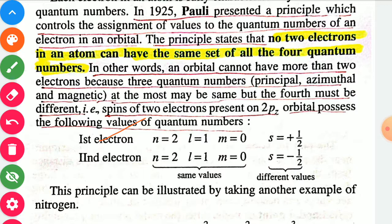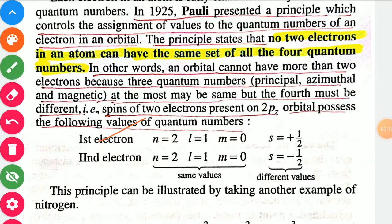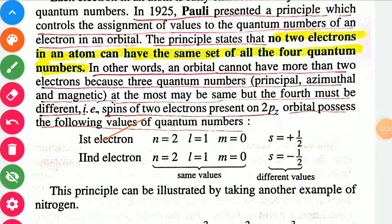For the second electron in the same shell with l equal to 1 and m equal to 0, the spin quantum number is minus half. So three quantum numbers — principal, azimuthal, and magnetic — are the same for both electrons, but the fourth quantum number, the spin quantum number, has different values: plus half for the first and minus half for the second.